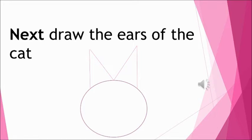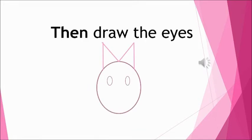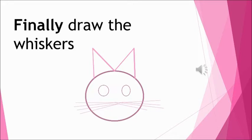Next you will draw the ears of the cat like I have drawn in the M manner. Then you will draw the eyes. Can you see how I have drawn the eyes of the cat? So first the circle, then the M showing the ears, and then the eyes.